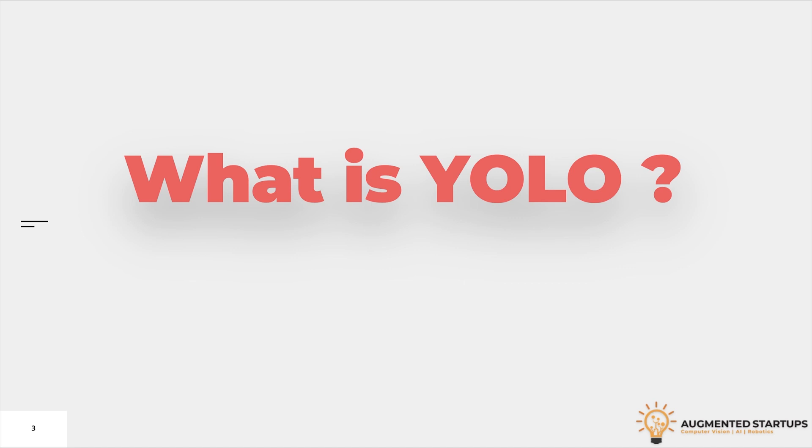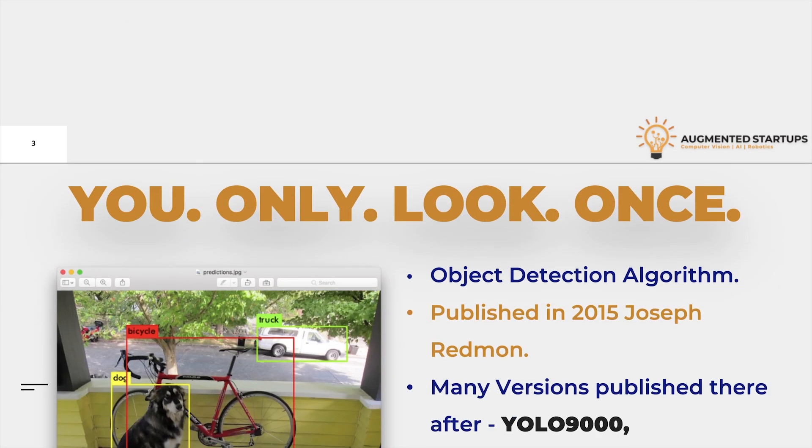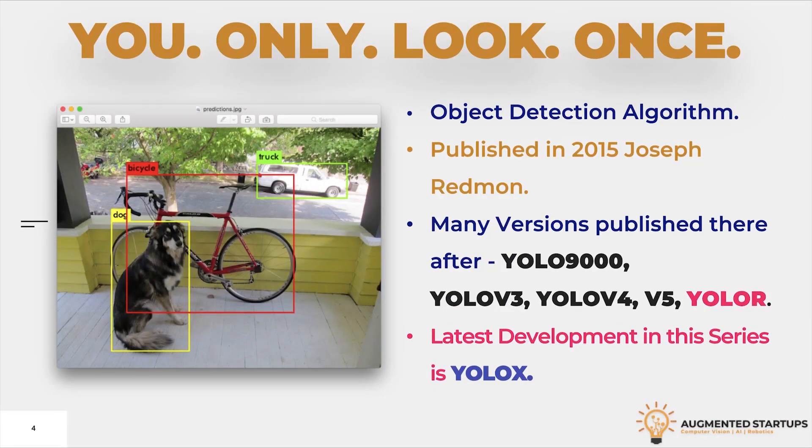So what exactly is YOLO? YOLO is an abbreviation for you only look once. It is a series of object detection algorithms. The first version was published by Joseph Redman and team in 2015.